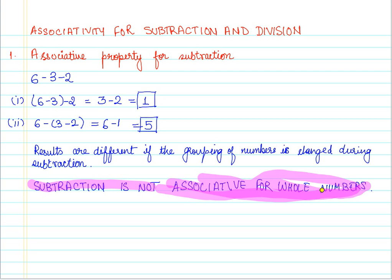It is a very important property. The reason why it is important for us to know this is that be careful when you are trying to subtract numbers. Be careful with the groupings, because one side of grouping will give different answer and other side of grouping will give you some another answer.